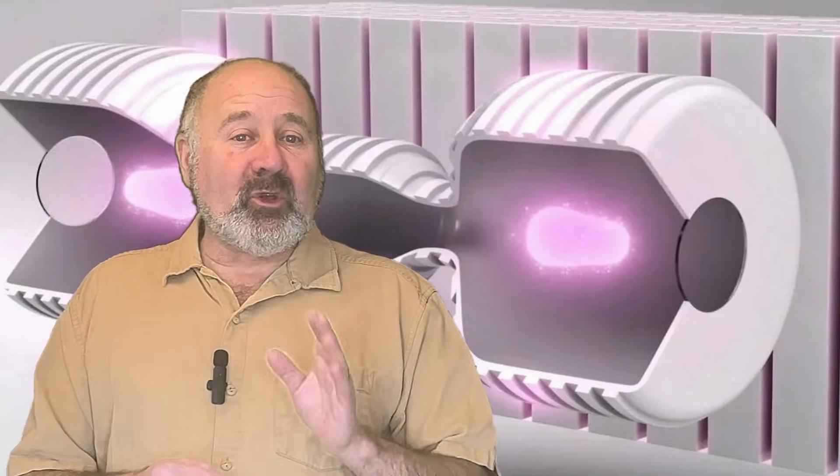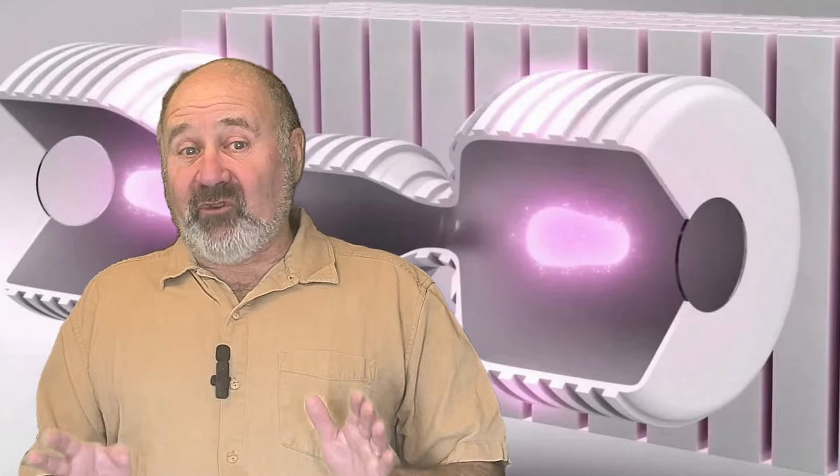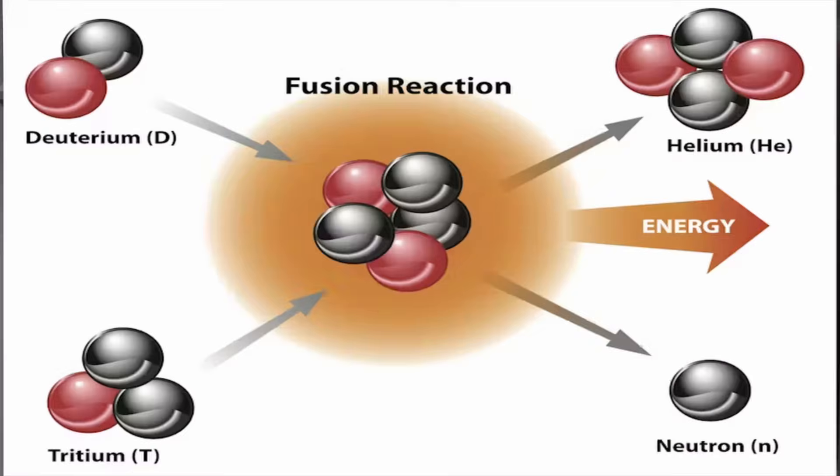So let's look at Helion's approach, and we'll start with talking about the different possible fusion reactions. The most popular fusion reaction on Earth, by far, is based on the two forms of heavy hydrogen. Readily available deuterium, or D, a hydrogen nuclei with one proton and one neutron,